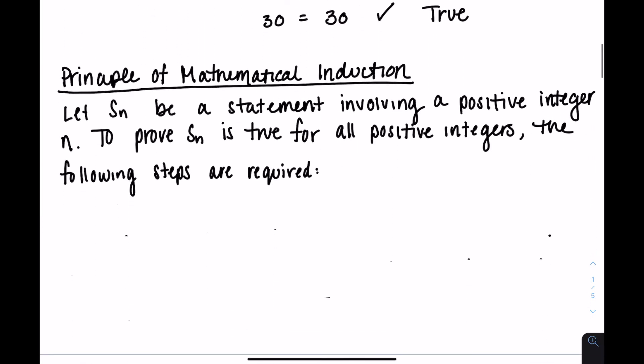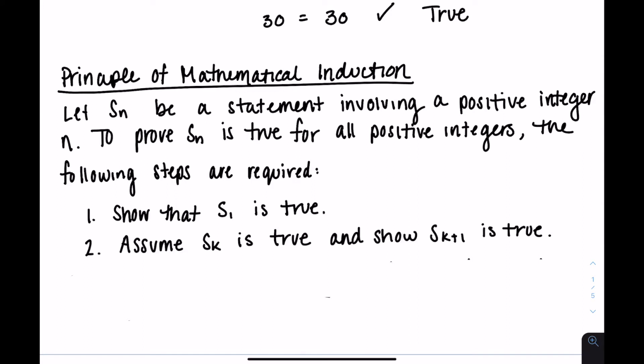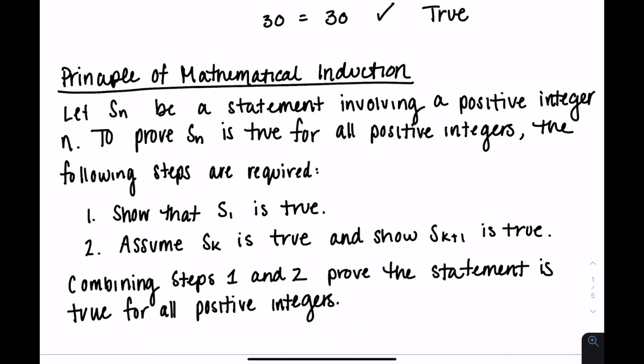This is the principle of mathematical induction. It states S(N) is a statement involving a positive integer N. To prove S(N) is true for all positive integers, you take two steps. First, show it's true when N equals 1. Then, assuming it's true for some arbitrary integer K, show the next value K+1 is also true. Combining these two steps proves the statement. Since it's true for 1, step two tells you it's true for 2, then 3, then 4 — creating a domino process making it true for every possible integer.